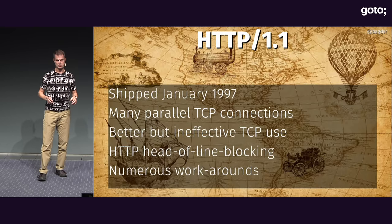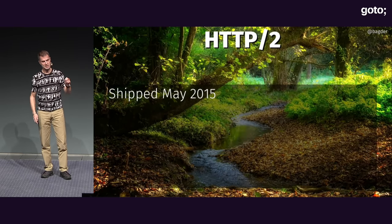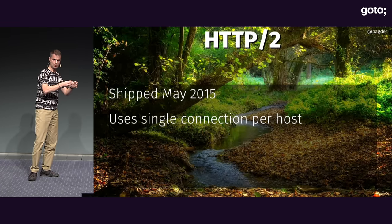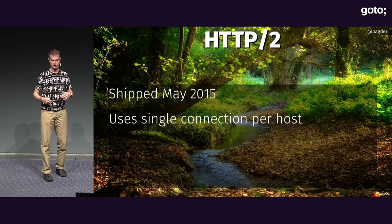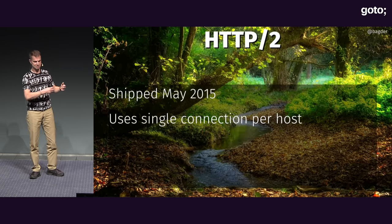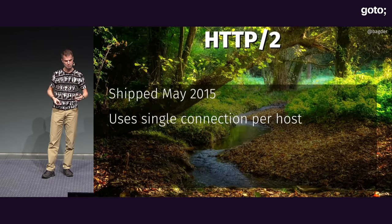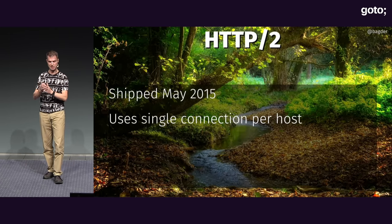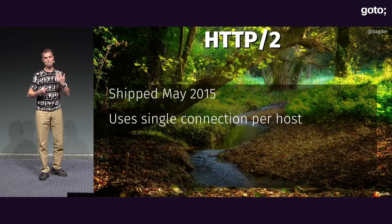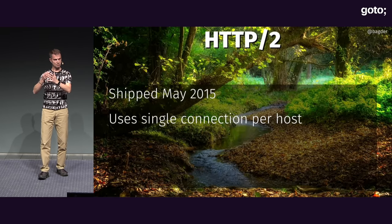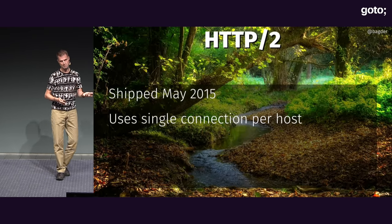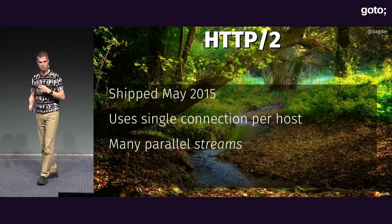Some of those fun workarounds we made into a protocol and called it HTTP 2. It shipped in May 2015. Instead of doing all those funny workarounds, we stuffed it into the protocol so we can do everything in a specified way. Instead of doing 60 connections to each site — six per hostname — we do one connection. One connection and we do many streams over that single connection, up to 100 usually. Much better TCP use because now suddenly we can have long-lived TCP connections. We can get up to speed. We can saturate the network in both directions much better, much faster.